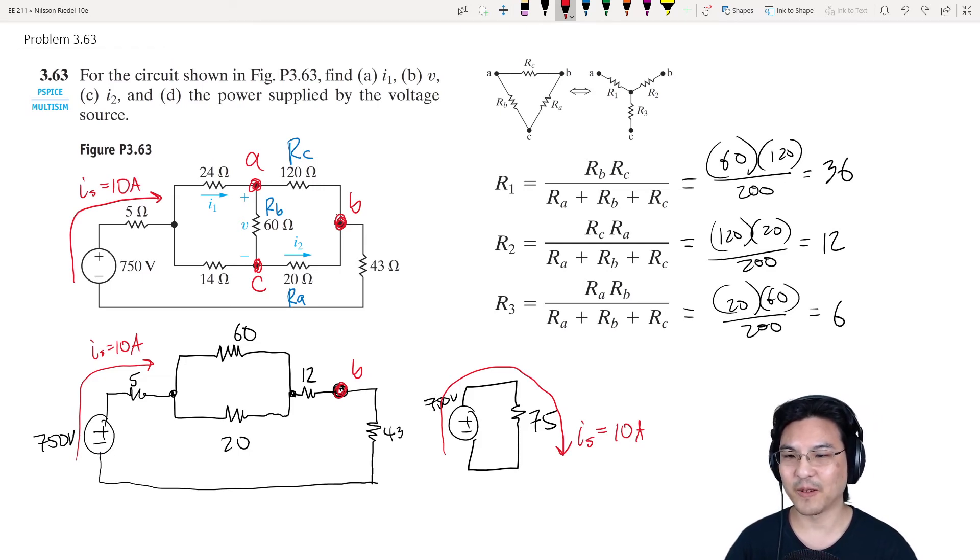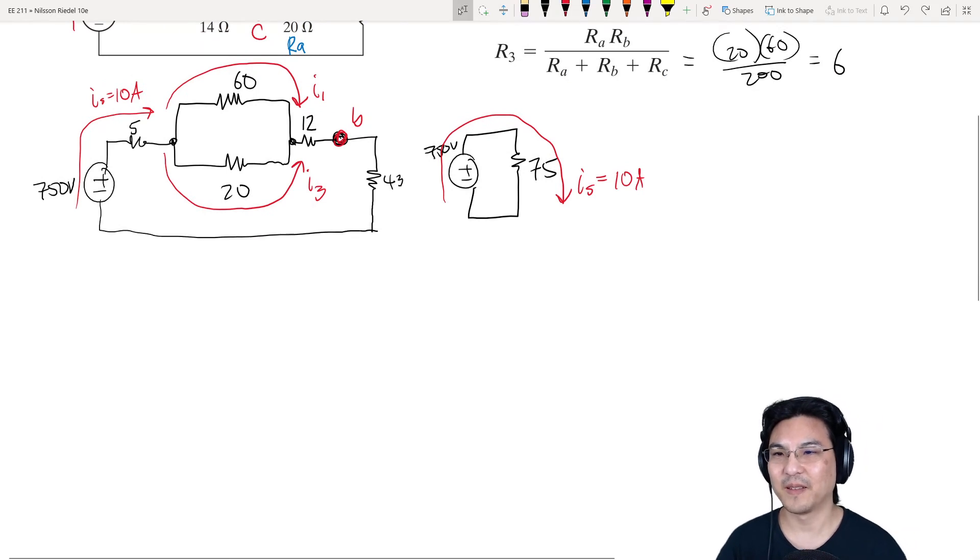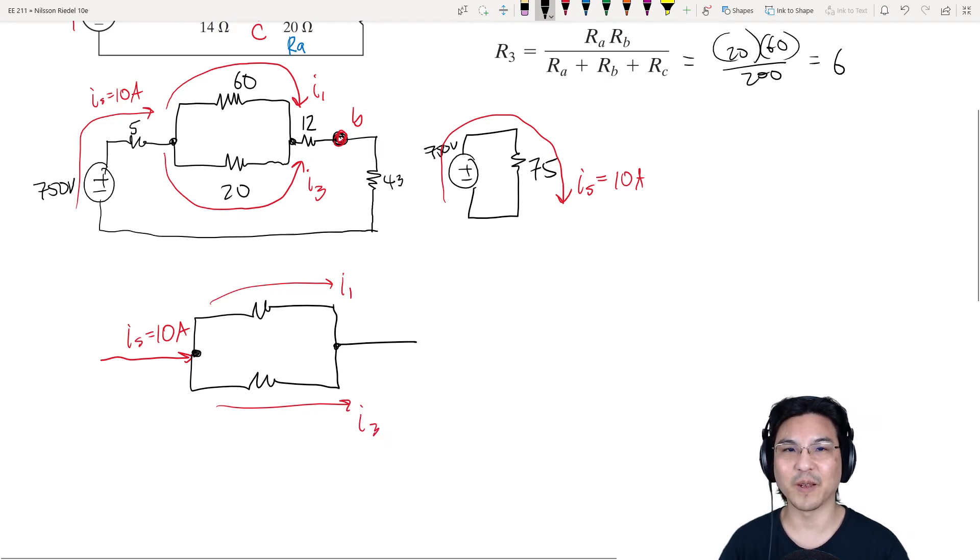And then if you look right here at this node, see how we got 10 amps going in, and then part of it goes this way and part of it goes this way. I'll call this I1 and I'll call this I3. Let's focus on that. 10 amps, and then it splits this way, this way, which means it's a current divider. Part of the current goes this way, part of the current goes this way.